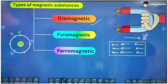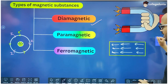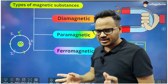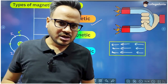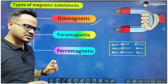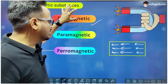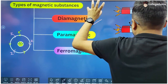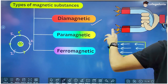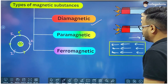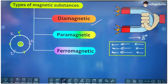Such a substance is called a diamagnetic substance. If the external magnetic field is not applied, all the magnetic dipoles are aligned randomly and the net magnetic moment of the substance is zero. When the external magnetic field is applied, a small magnetism is induced in the substance opposite to the external magnetic field.